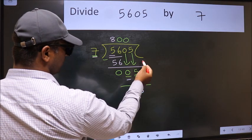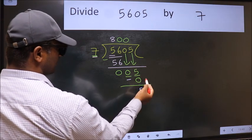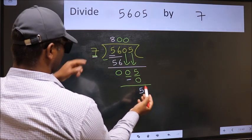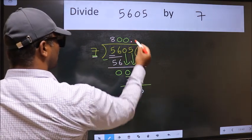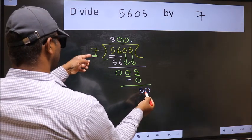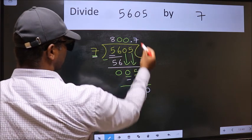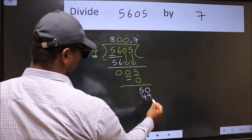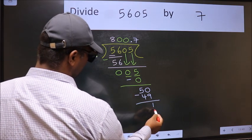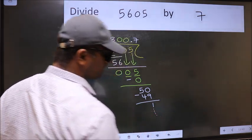Over here, we did not bring any number down, and 5 is smaller than 7. So now we can put dot and take 0. So 50. A number close to 50 in the 7 table is 7 times 7, 49. Now we should subtract. We get 1. And you continue the division. I am not doing that.